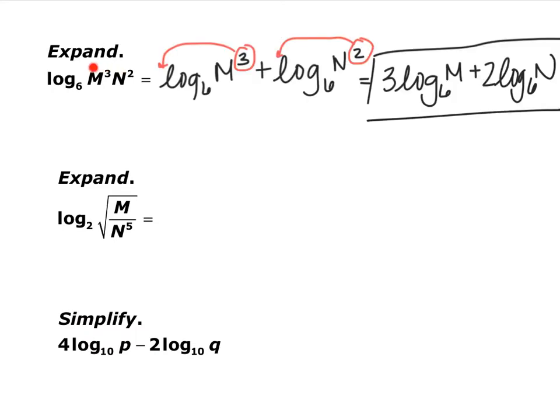So first I split up the multiplication. I have log base 6 of m cubed plus log base 6 of n squared. And then I took the exponents and brought them down in front. So you end up with 3 log base 6 of m plus 2 log base 6 of n. So if you haven't already done so, go ahead and pause the video and try the next two.